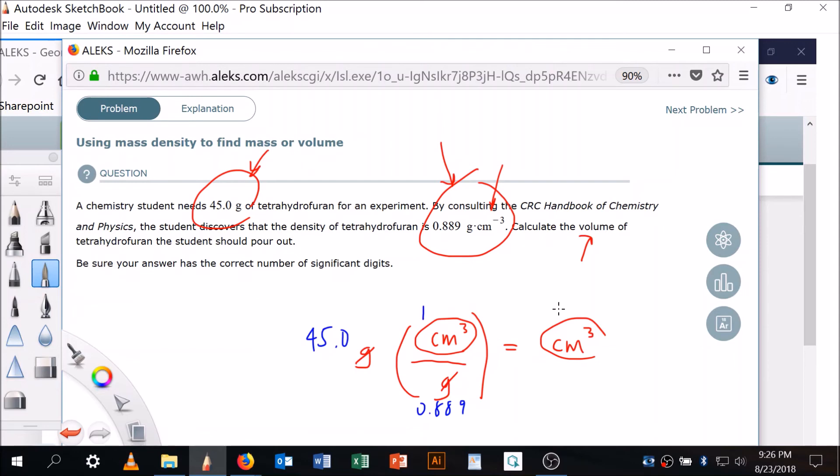I'm going to put this in my calculator. And I am going to see 45 divided by 0.889 is equal to 50.6186 dot dot dot cubic centimeters.